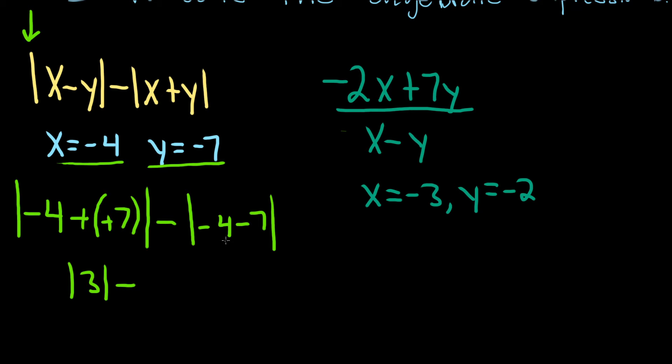Minus, and then negative 4 minus 7 is the absolute value of negative 11. So we're here.